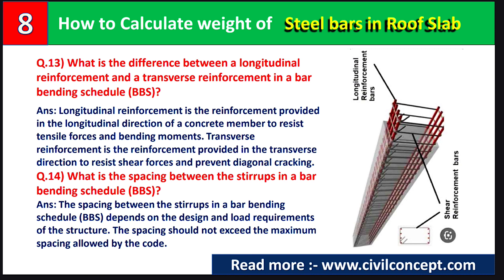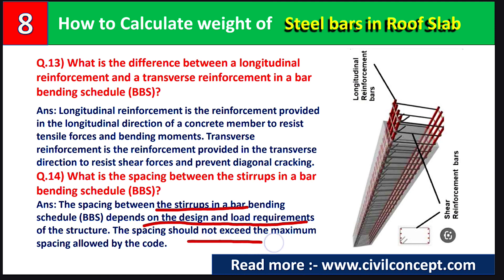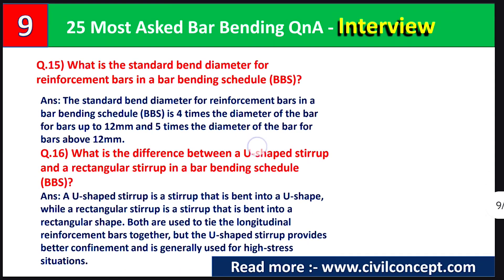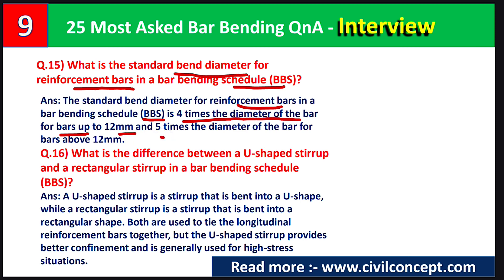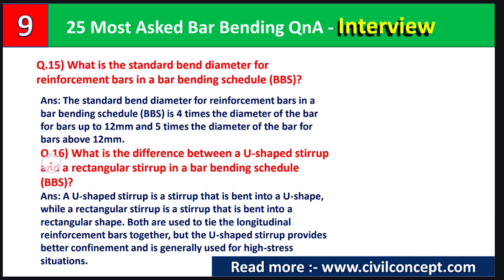Question number fourteen: the spacing between stirrups in a bar bending schedule depends on the design and load requirements, and should not exceed the minimum spacing allowed by the code. Question number fifteen: what is the standard bend diameter of reinforcement bars in BBS? It is four times the diameter of the bar for bars up to 12 mm, and five times the diameter for bars above 12 mm.